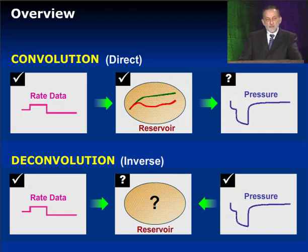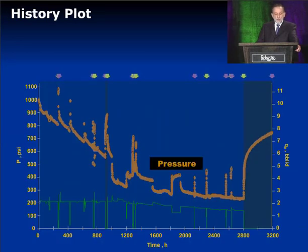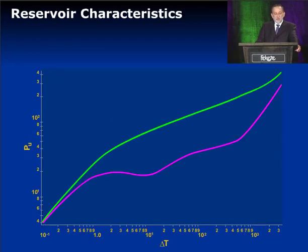It's an inverse process and has all the problems and limitations of all inverse processes. So in real life, what we have is data that looks like this. The pressure data are shown in brown and the rate in green. And what we're looking for is something like this, which we will call a type curve and a derivative. This shape actually describes our reservoir characteristics.